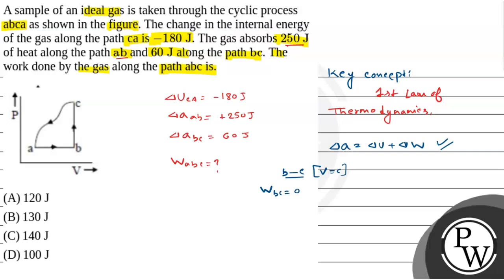Now, the work done along ABC, which we need to find, is W_AB plus the work done along BC. Now, work done along BC is 0, so the work done along ABC is simply the work done along AB. So, we simply need to find the work done along the path AB.